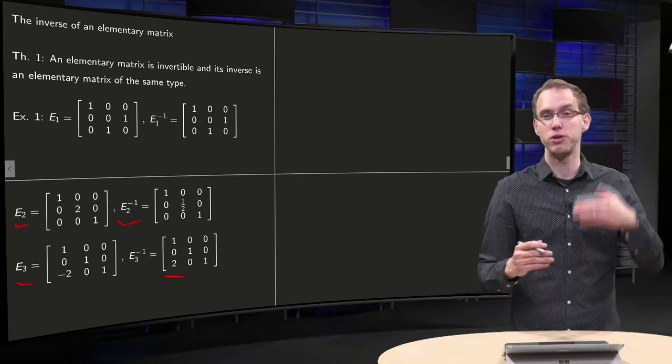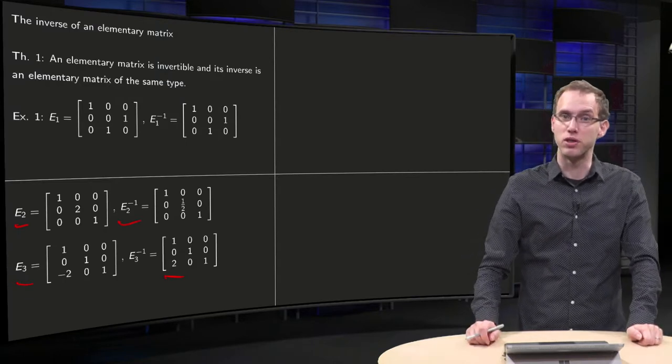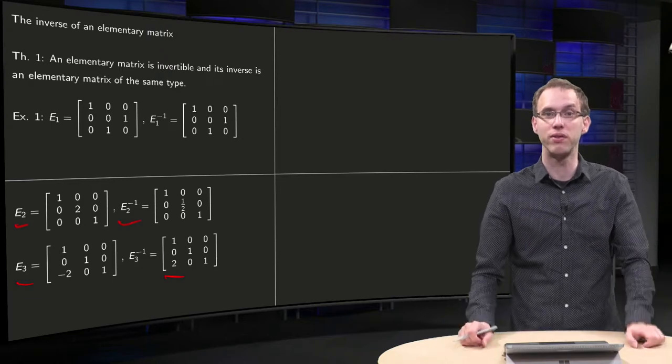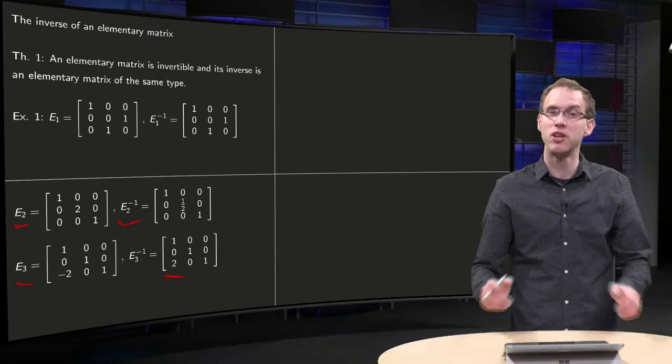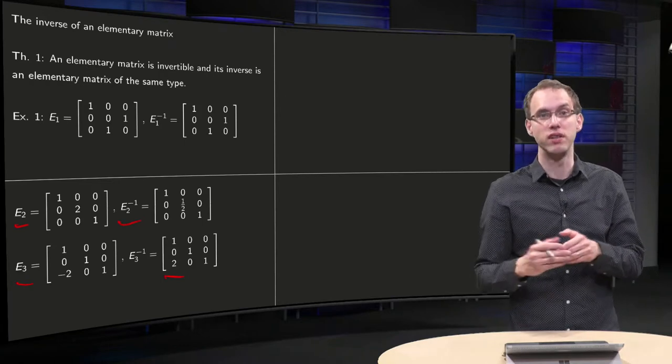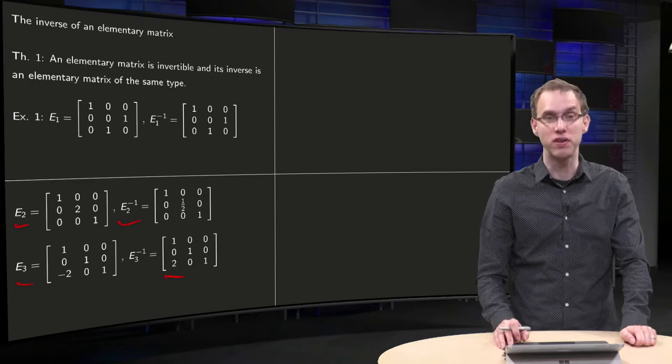Because first you add minus two times the first row to the last row, and then you would add two times the first row to the last row, so those operations cancel out and the product will give you the identity matrix. So you see in all three cases, the inverse of an elementary matrix is again an elementary matrix which looks very similar.